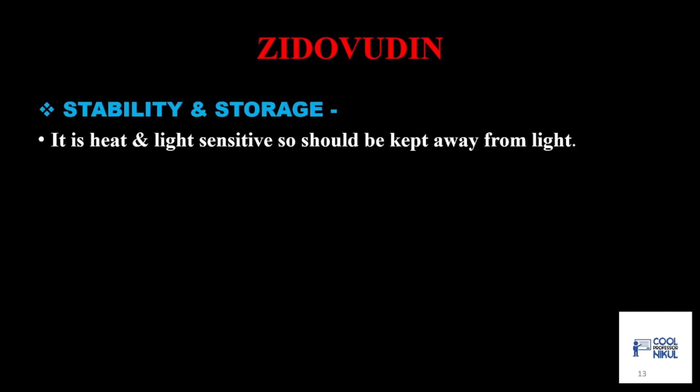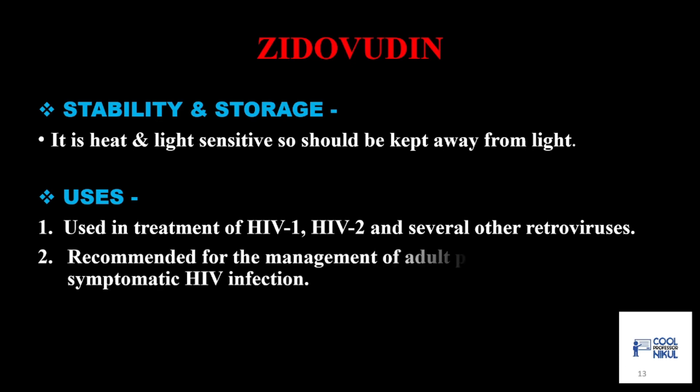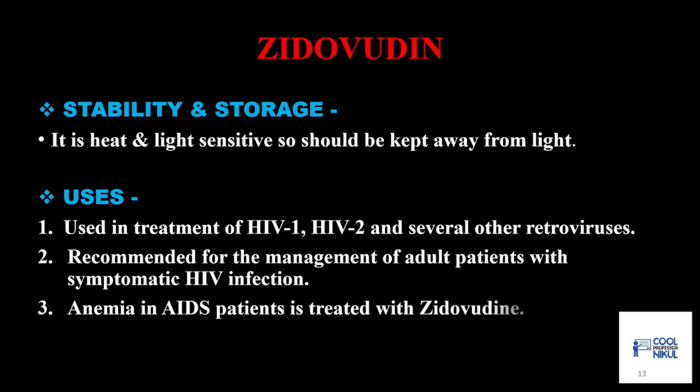Zidovudine: stability and storage — it is heat and light sensitive, so kept away from light. Uses: mainly used for the treatment of HIV-1, HIV-2, and several other retroviruses. Recommended for the management of adult patients with symptomatic HIV infections and anemia in AIDS patients.